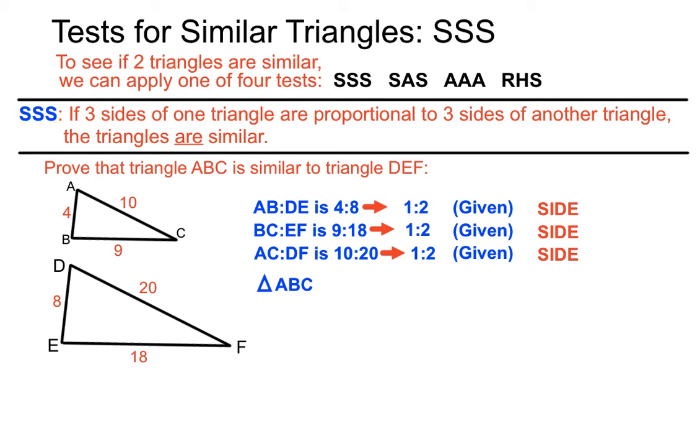So then we can say triangle ABC. And that's a funny symbol, a different symbol there. And that means is similar to, three sort of markings in a row there. The triangle ABC is similar to triangle DEF. And the reason is, because it passed the SSS test for similar triangles.